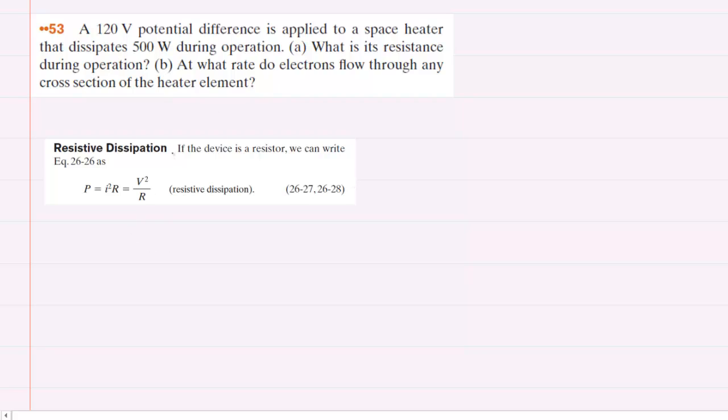In part A, we are asked to determine the resistance during the operation of this space heater. We are given a potential difference, symbolized by V, as well as a power value, symbolized by P.